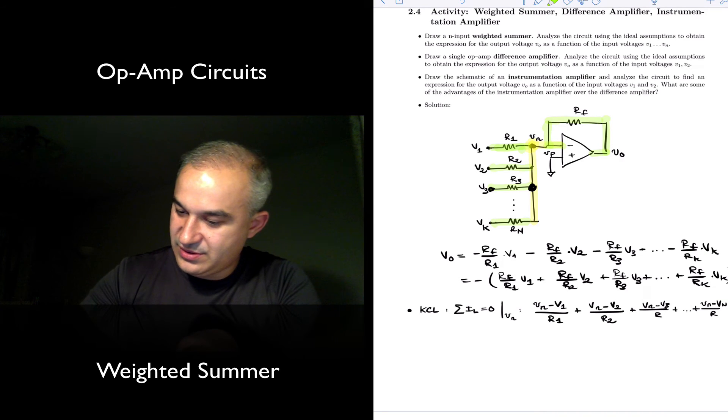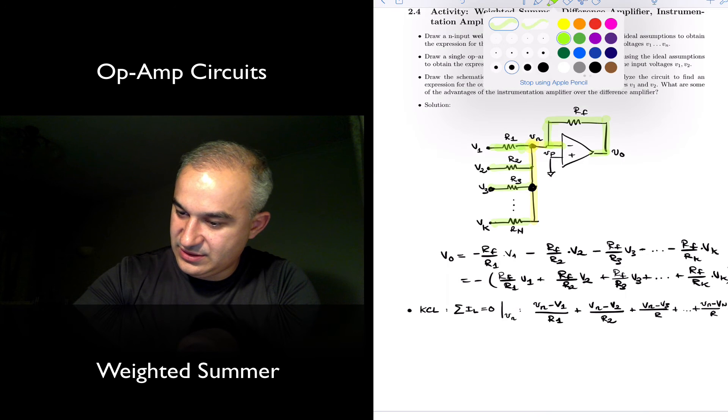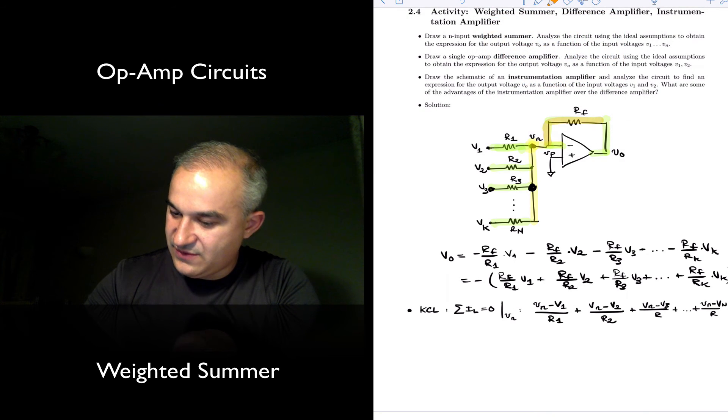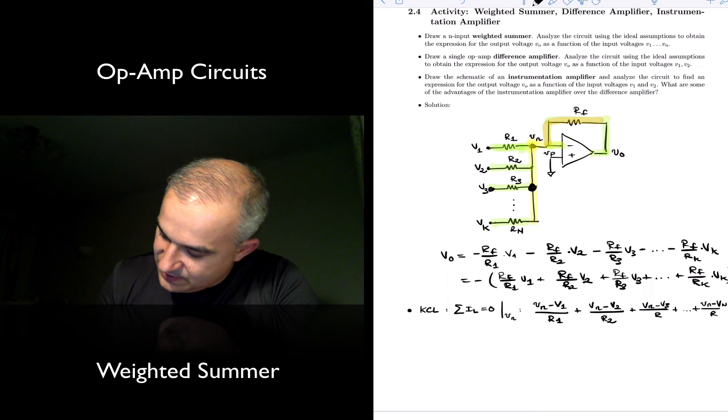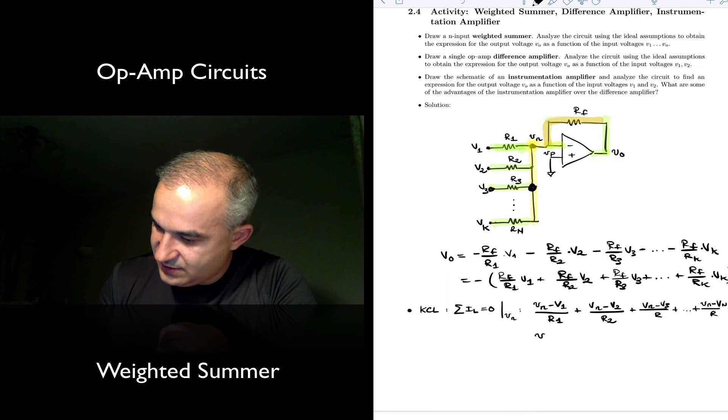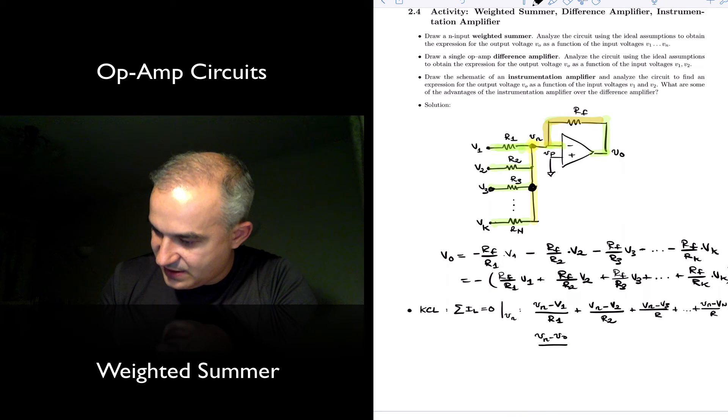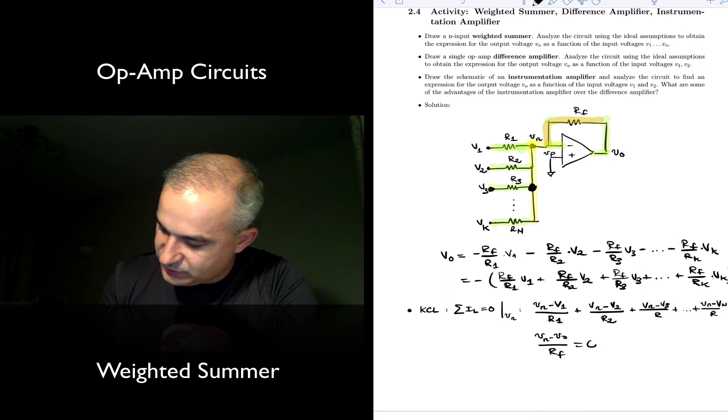Plus there's one more and it's the current from Vn and V output, plus Vn minus V output divided by RF is equal to zero.